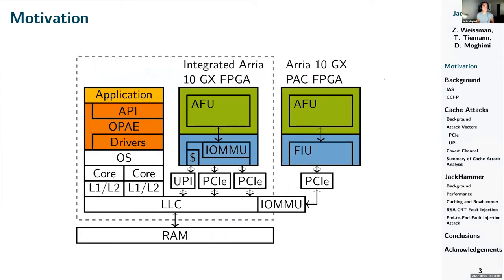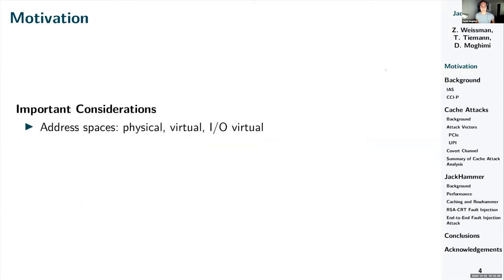In this work we studied two FPGA platforms that are similar but integrated differently. One is an Intel integrated Arria 10 FPGA on the same CPU die, directly connected to the memory subsystem. The other is an Arria 10 FPGA as a PCIe expansion card — the PAC — connected externally through the PCIe interface. Both platforms have their own details we will explain in more detail.